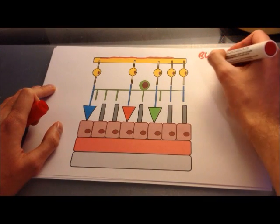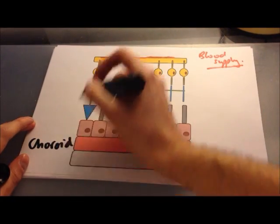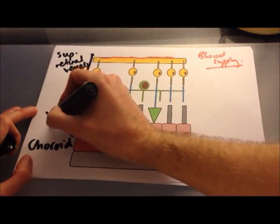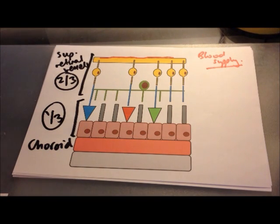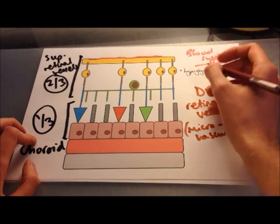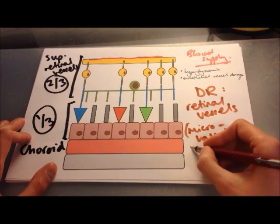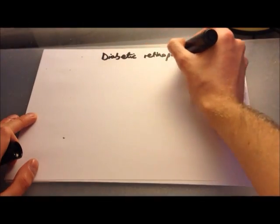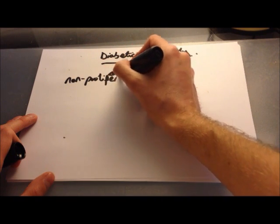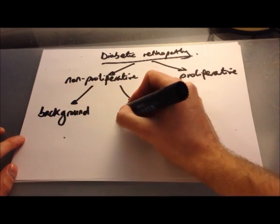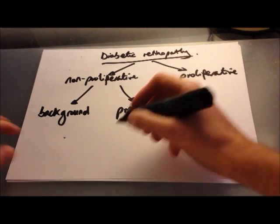The retina receives its blood supply from the choroid, supplying the outer third including the photoreceptors, and from the superficial retinal vessels, supplying the inner two thirds. Diabetes affects the superficial retinal vessels through microvascular disease. The mechanism isn't fully understood but involves endothelial damage, loss of pericytes due to hyperglycaemia, damage to the basement membrane, and vessel wall breakdown, all leading to incompetent leaky blood vessels. Diabetic retinopathy is broadly divided into non-proliferative (background and pre-proliferative) and proliferative retinopathy, with maculopathy classified separately.